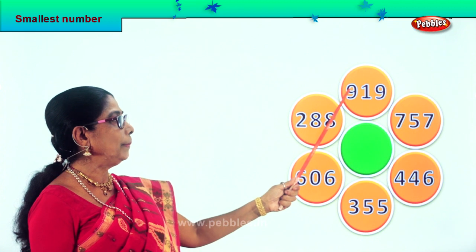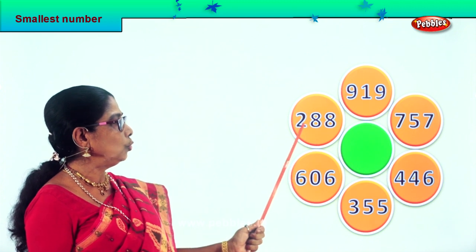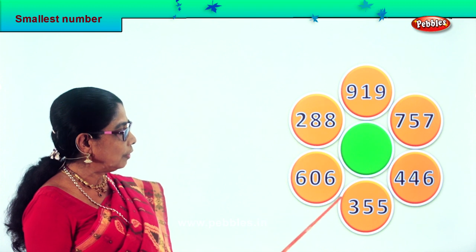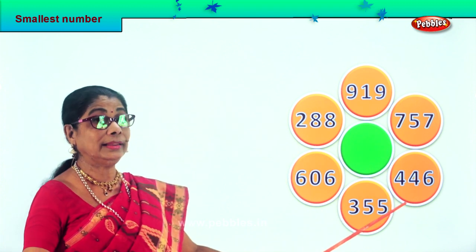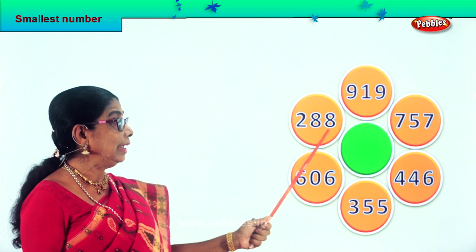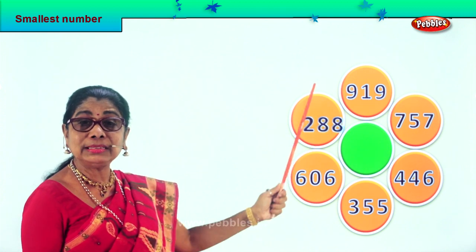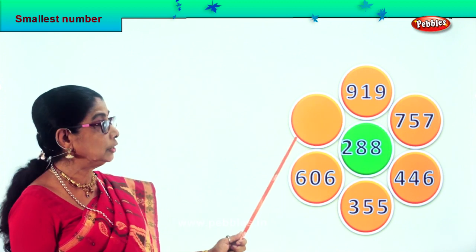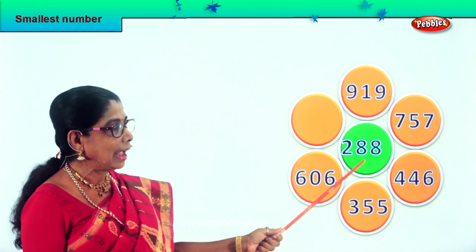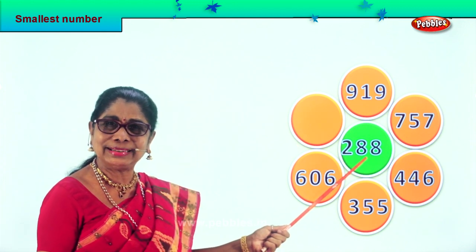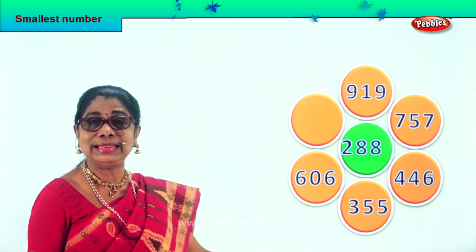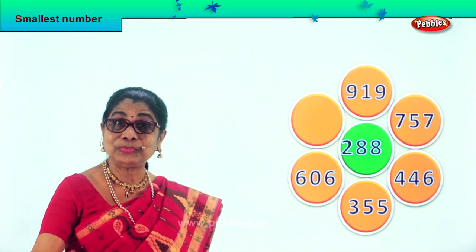Very good. This is the biggest and two hundred is the smaller. Is there any other two hundred? No. We have only three hundred and four hundred. Therefore, two hundred eighty-eight is the smallest among these six numbers. We'll take two hundred eighty-eight and put it in the green space here — we pick the smallest among these numbers.